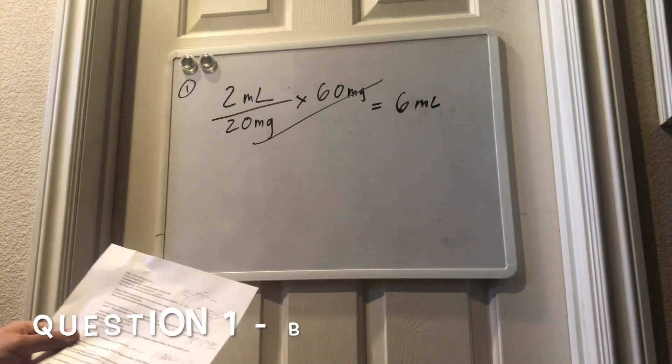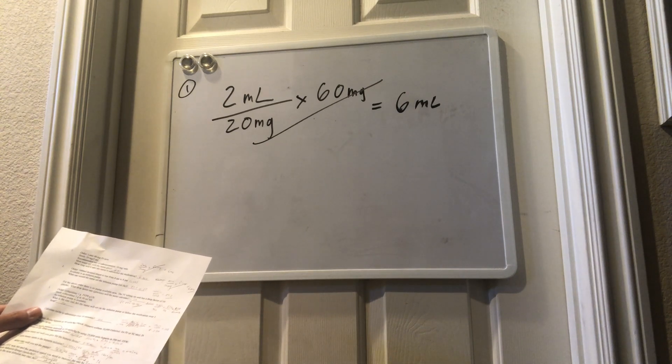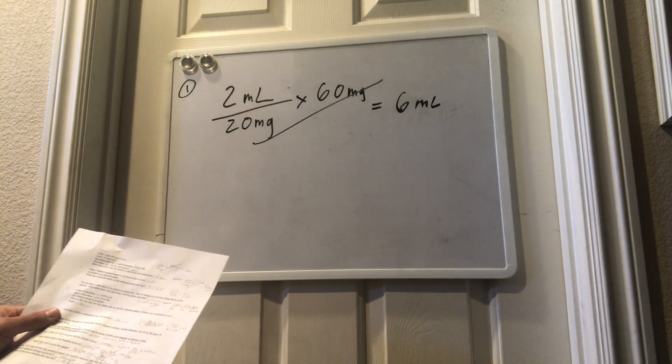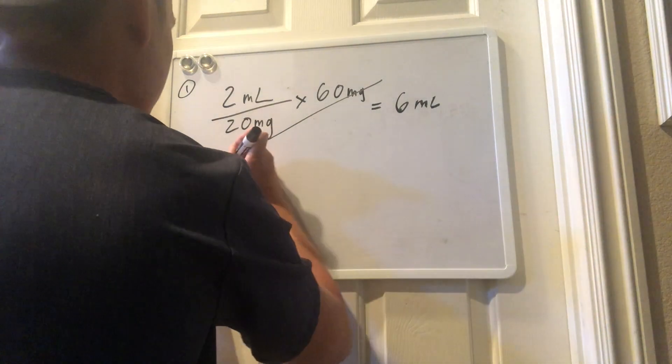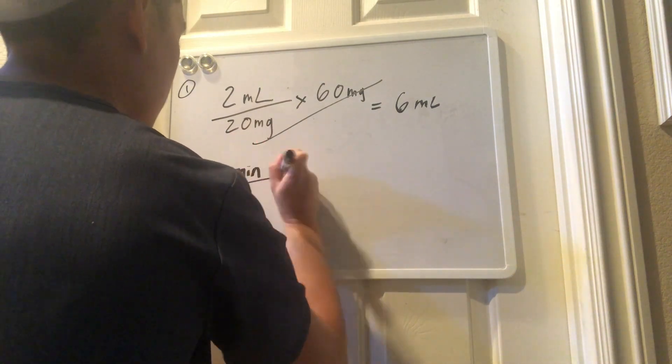Now, the second part of the question will ask you, how long will it take for the nurse to administer the medication? You look carefully in the question. You're given a recommended rate of 10 milligrams per minute. So, we're going to set it up. We'll put 1 minute over 10 milligrams.